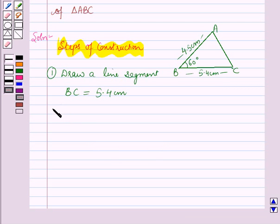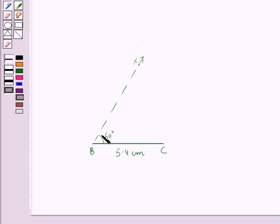Now, in the second step, construct an angle CBx equal to 60 degrees. Here, we are constructing an angle CBx which is equal to 60 degrees.